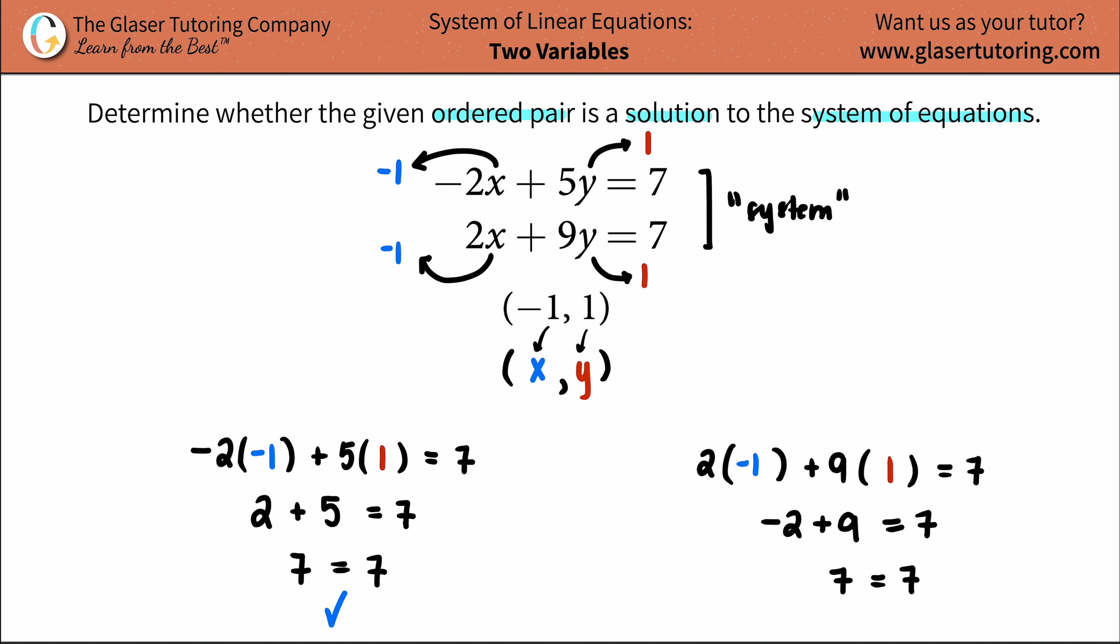So in this case, it works out. Is negative 1 comma 1 a solution to the system? You are absolutely correct. It is. So we're going to say a big yes. This is a solution.